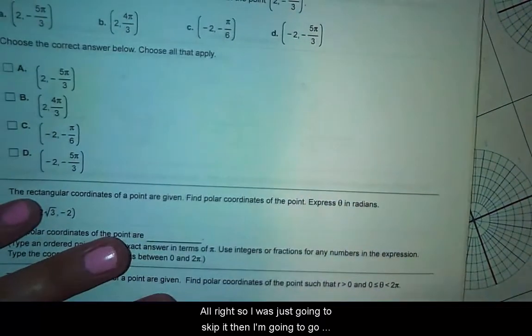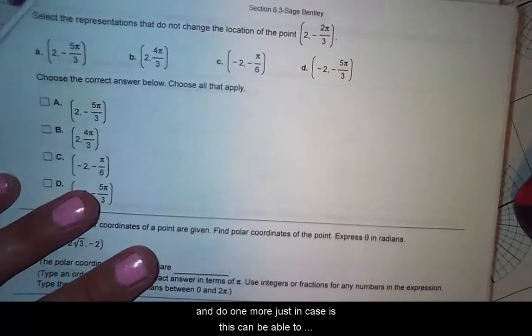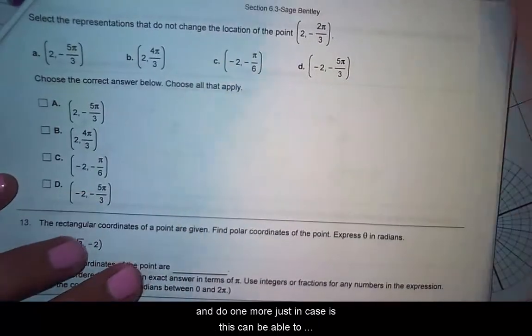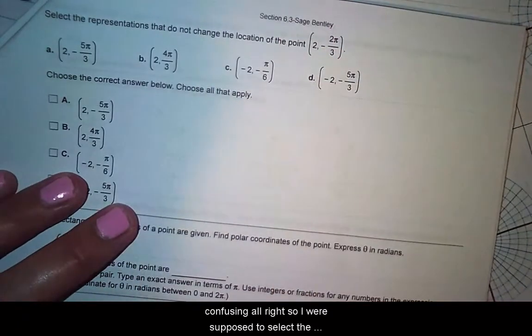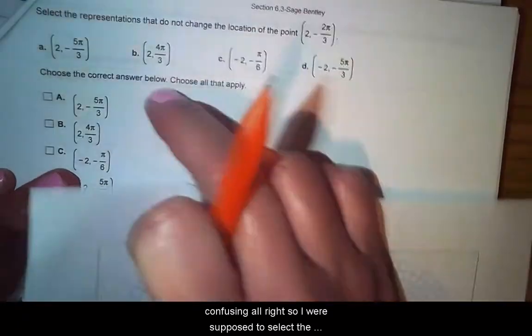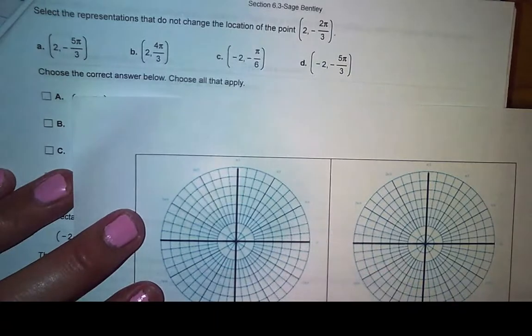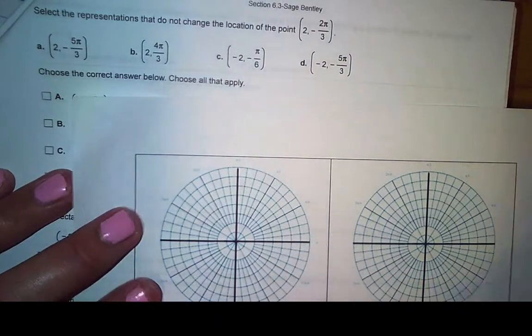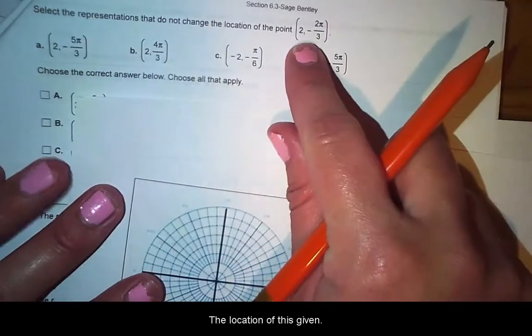All right, so I was just going to skip it, but I'm going to go ahead and do one more, just in case, because this can be a little bit confusing. So we're supposed to select the representations that do not change the location of this given point.